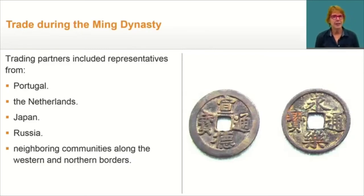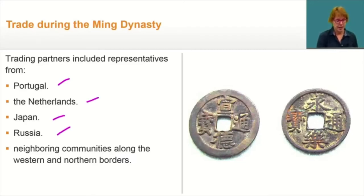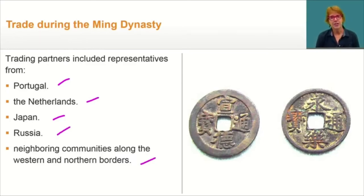China was not completely closed off during the Ming Dynasty — trade did occur, but it was more limited to specific trading partners. These included Portugal, the Netherlands, Japan, Russia, and neighboring communities along the Western and Northern borders. There were also other communities, civilizations, and cities along the Silk Road, like Tibet, that were also trading partners with China.